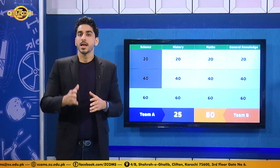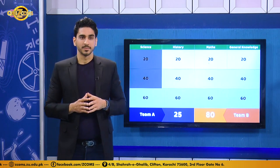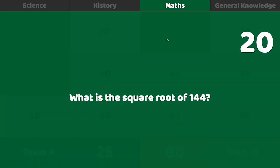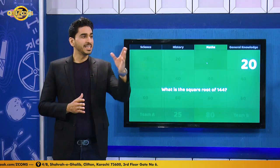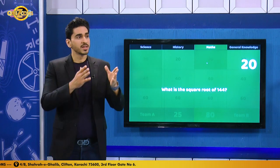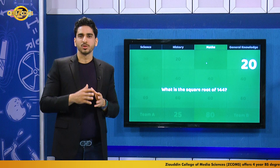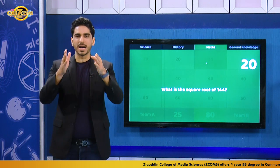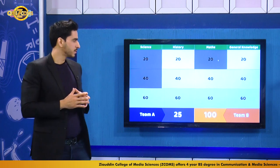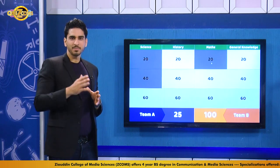Team B chooses maths for 20. The question: what is the square root of 144? Team B buzzes first and answers 12. The host double-checks — are you sure? The maths student confirms 12, and that is absolutely correct. Very well done, Team B.